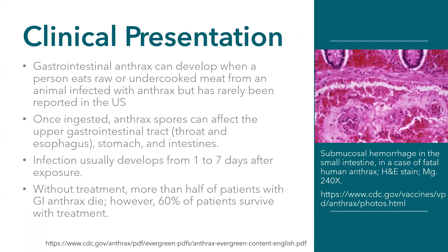The last clinical presentation is gastrointestinal anthrax. This has rarely been reported in the United States and typically occurs when someone eats raw or undercooked meat from an animal infected with anthrax — typically domestic animals like goats or cattle, though deer and antelope can also be sources. When ingested, the spores can cause infection in the upper GI tract, including the throat and esophagus, and can reach the stomach and intestines causing hemorrhage. Infection usually occurs one to seven days after exposure. More than half of people with GI anthrax die, likely because it is not on the differential when patients present.